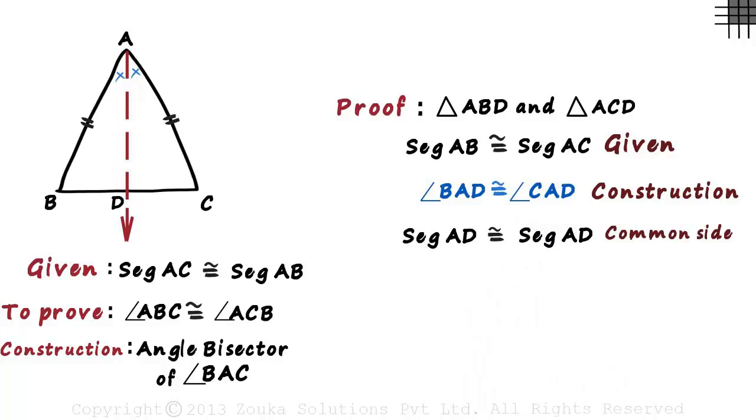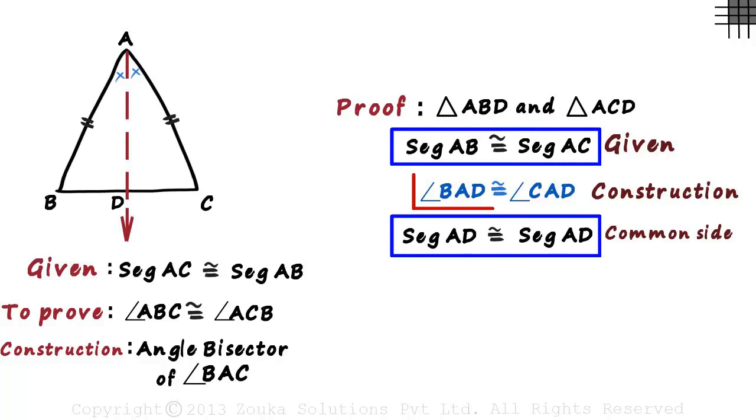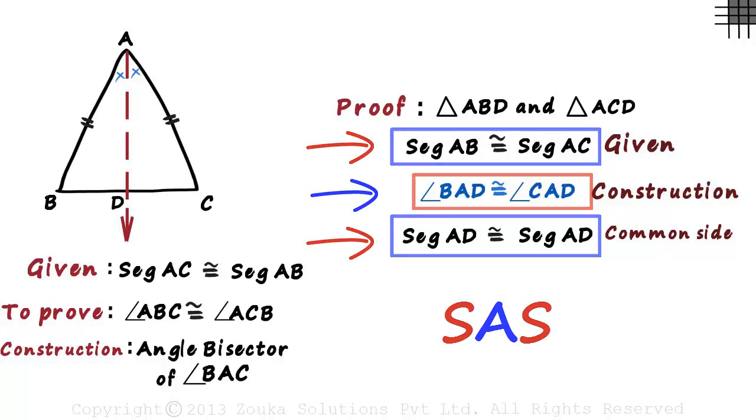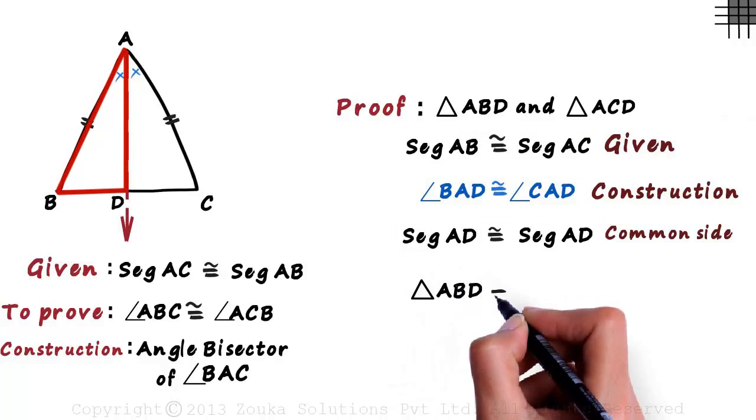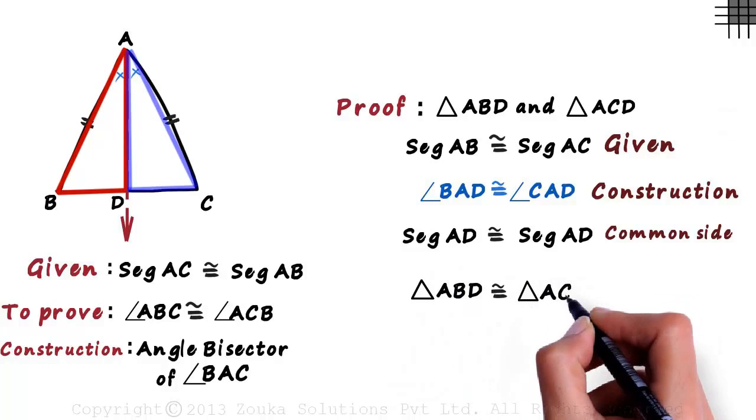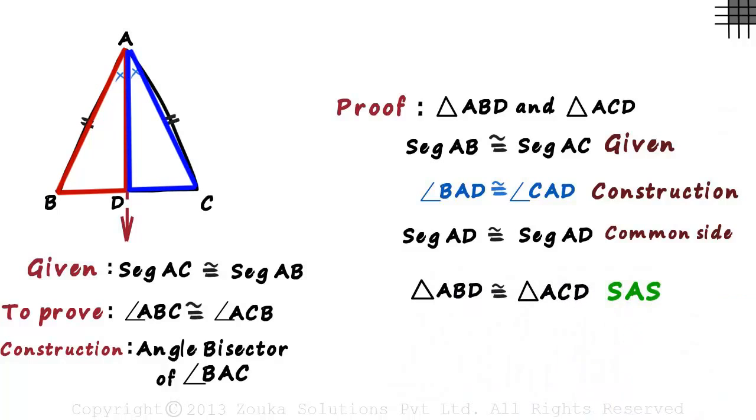Guess what? We just proved that the two sides and the included angles of both the triangles are equal. Side, angle, side. We can say that triangle ABD is congruent to triangle ACD by the SAS axiom.